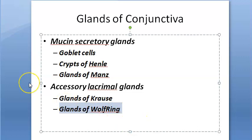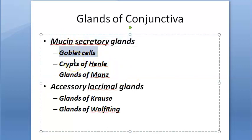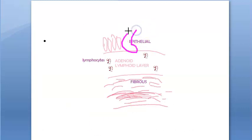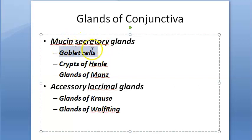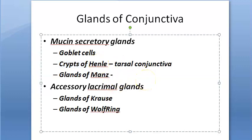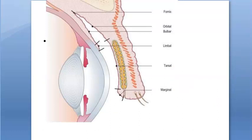Now the mucin secretory glands. Goblet cells are unicellular glands located within the epithelium — wherever the epithelium is, goblet cells are present with no specific position. Crypts of Henle are present in the tarsal conjunctiva — don't confuse these with the loop of Henle in the kidney nephron. Glands of Manz are found in the limbal conjunctiva.